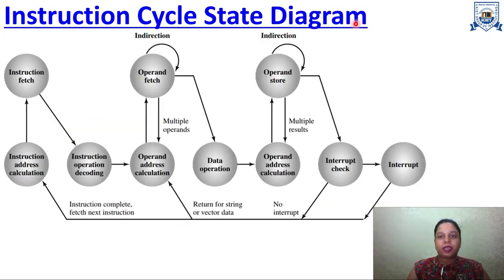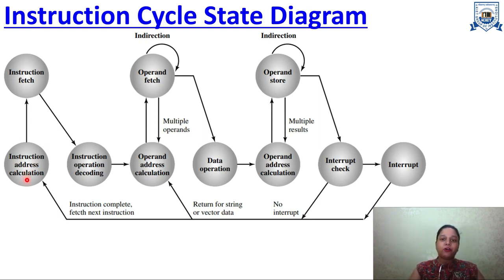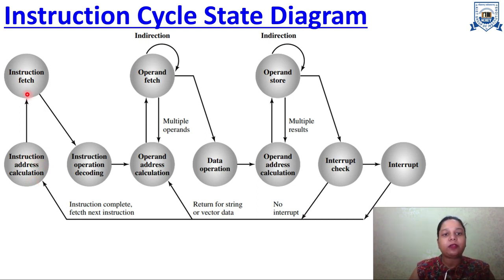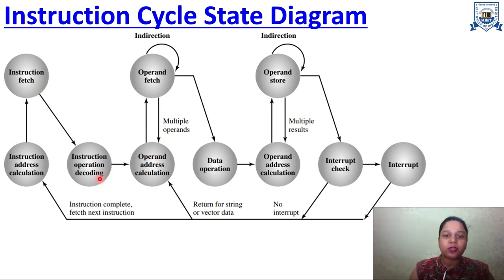Now we will see the state diagram of the instruction cycle in elaborated form. Start from Instruction Address Calculation — whenever there are instructions in memory, the first instruction's address is in the PC register (Program Counter). The address on the program counter has to be read or calculated. After getting the instruction address, we fetch it — we read what that instruction is. Next, instruction operation decoding is done to understand what the operands and opcodes are.